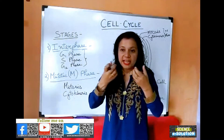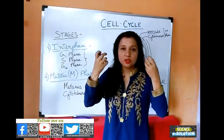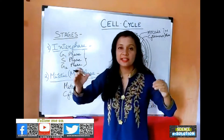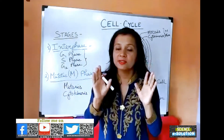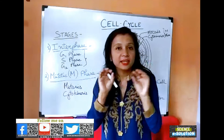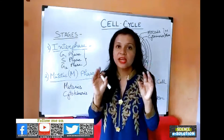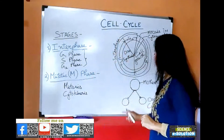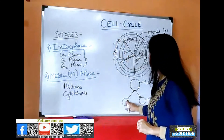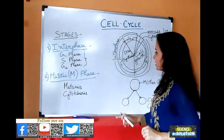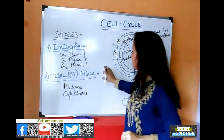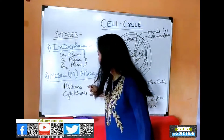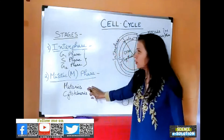The DNA is pulled into two poles, and the cell also divides so that each new cell equally receives the same amount of DNA. These daughter cells receive an equal amount of DNA from the mother cell. This completes the mitotic phase, consisting of mitosis and cytokinesis.